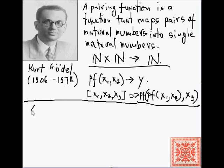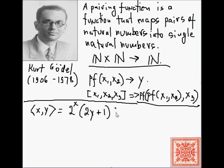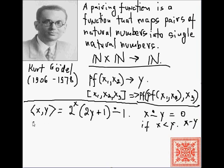Formally speaking, here is a formal definition of a pairing function of x and y, given in the third chapter of Computability, Complexity, and Languages by Davis, Weyker, and Segal. The pair of x and y is defined to be 2^x times (2y + 1) dot-minus 1. Recall that dot-minus does not allow us to go negative, so it equals zero if the result would be negative. Since x and y are natural numbers and 2^x times (2y+1) is guaranteed to be at least one, the pair of x and y plus one equals 2^x times (2y+1).